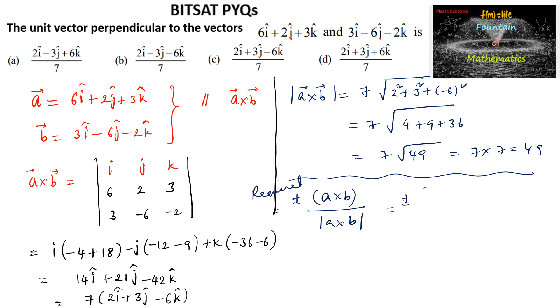So we can write plus or minus a cross b, 7 times 2i plus 3j minus 6k, upon mod of a cross b which is 7 into 7, that is 49. So we may cancel 7 and we can write the answer plus or minus 2i plus 3j minus 6k upon 7.